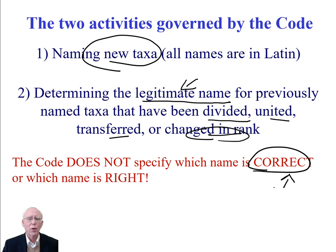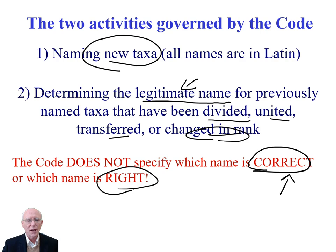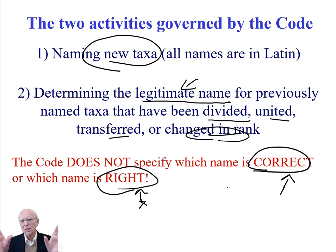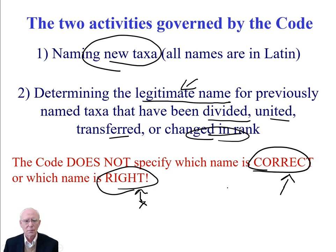Determining what the correct name is requires the judgment of a taxonomist. A taxonomist writes some type of a work, and in that work they specify what the correct name is for each taxon. It has to be legitimate — it has to follow the rules. The Code does not tell us which name is right, so there could be more than one correct name, more than one treatment. The example we used was Small's flora versus Weekly's flora — who are you going to follow? That's a judgment every scientist has to make.